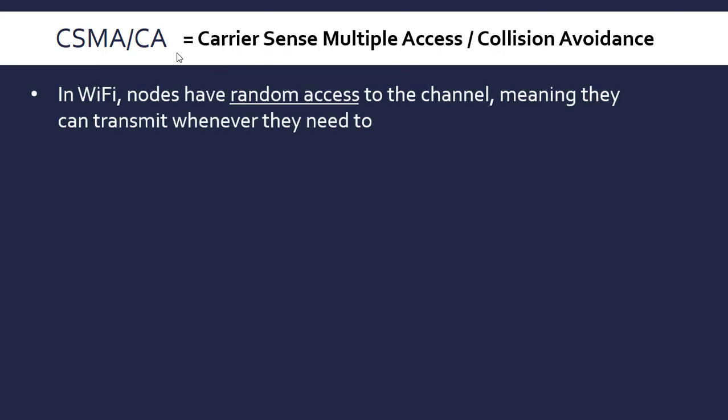Wi-Fi is a group of protocols. This is one of the protocols which Wi-Fi uses, one of the most important ones. In Wi-Fi, the nodes connected to the network are said to have random access to the channel — the channel being where we're actually pushing the data through, in this case the air, because we're dealing with wireless communication. Random access means the nodes can transmit whenever they need to; they're not allocated a time to communicate.